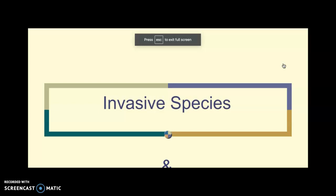In your notes, the number one cause of endangered species or loss of biodiversity is habitat loss. The number two cause is invasive species, and this is a much more modern phenomenon because of transportation of stuff across the ocean — we can ship things across the world very quickly, and so we've seen a lot of invasive species come about in the last 50 years or less.